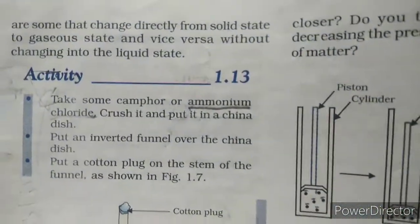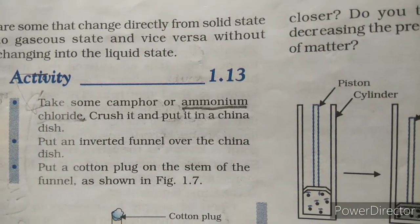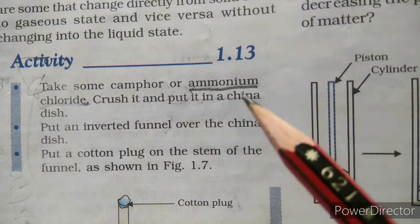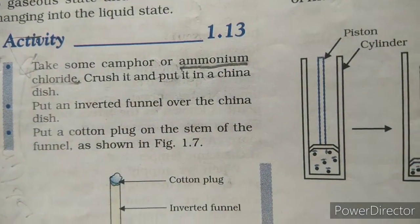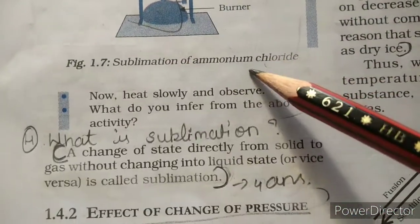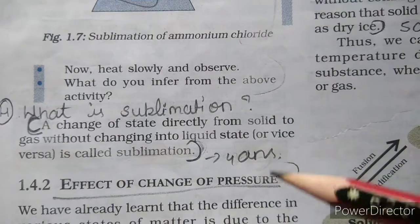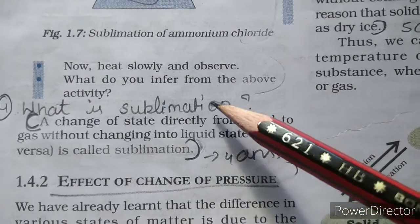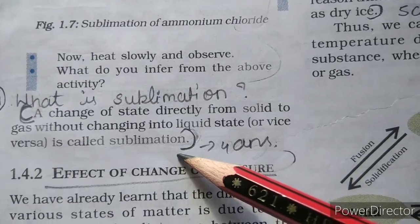There are some substances that change directly from solid state to gaseous state, and vice versa, without passing through the liquid state. For example, take some camphor or ammonium chloride, crush it and put it in a china dish. Place an inverted funnel over the china dish and put a cotton plug on the stem of the funnel. Heat slowly and observe. A change of state directly from solid to gas without changing into liquid state — or vice versa — is called sublimation.